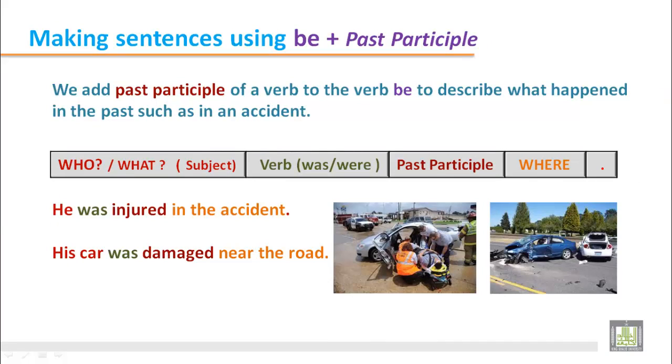In the second sentence, this is also about an accident. What happened here? His car—this is a singular subject—so we used was, and after that the main verb damage in the past participle form, damaged, and where it happened: near the road. His car was damaged near the road. All this describes something that happened in the past.